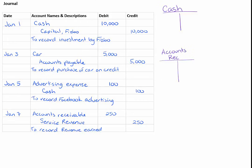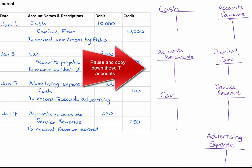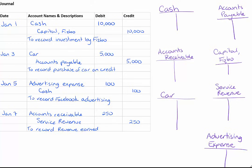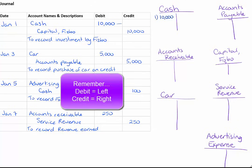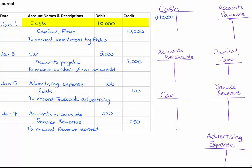I've put them right beside the journal entry so you can see how these are going in, and I'm going to go through each account individually and just copy them into the T-accounts. You can put the date beside the transaction, but it's not necessary — I'm just going to put the number representing the date. For Jan 1st, I'm putting one and I've got debit $10,000 cash there. Once I record that transaction into my T-account, I'm just going to check it off.